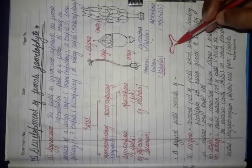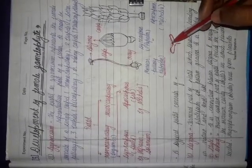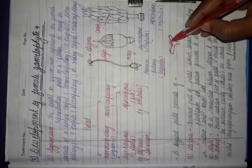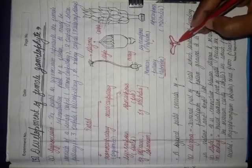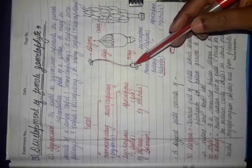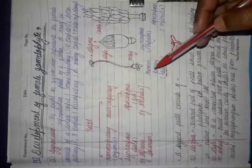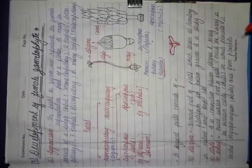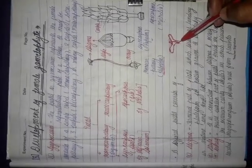When pollen grains fall on the stigma, they start germination and a pollen tube arises. The pollen tube travels toward the ovary and embryo sac, where the female gamete is located, to fuse with the male nucleus. The style provides the passage for the germinating pollen tube — this is a very important function related to fertilization.